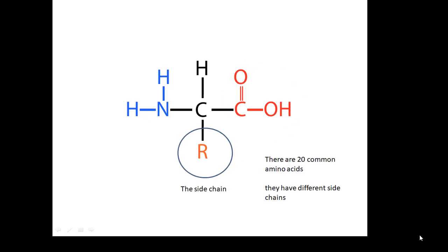Then we have the side chain. There are 20 common amino acids, and basically they have different side chains. Everything else is the same, but the side chain is different.